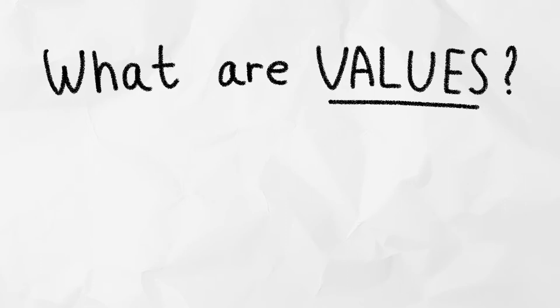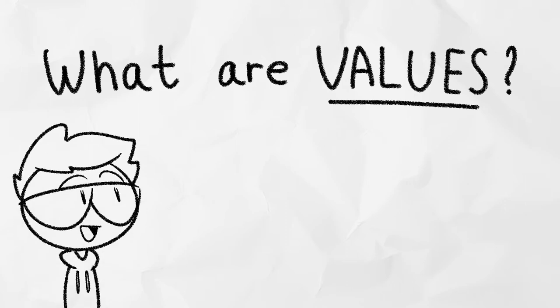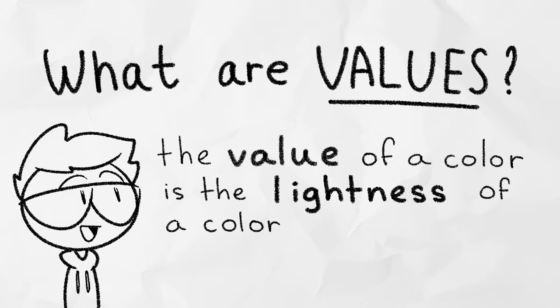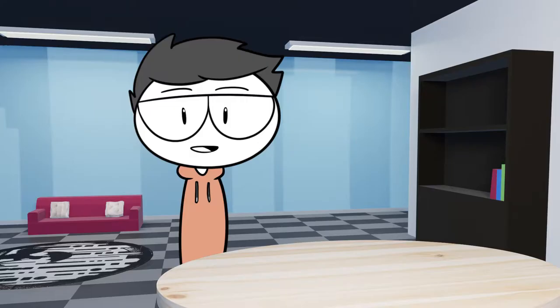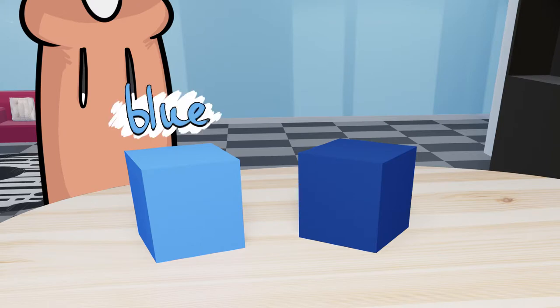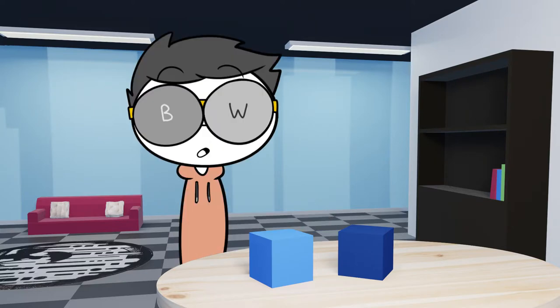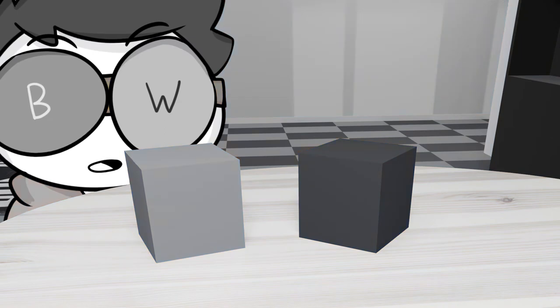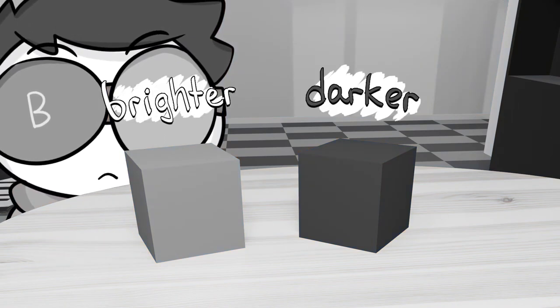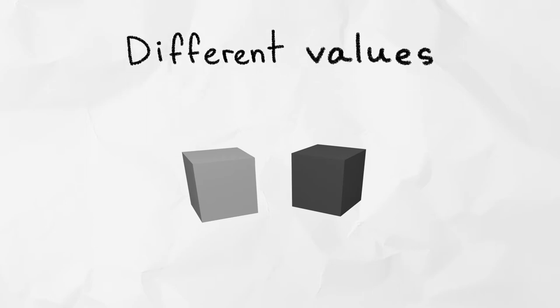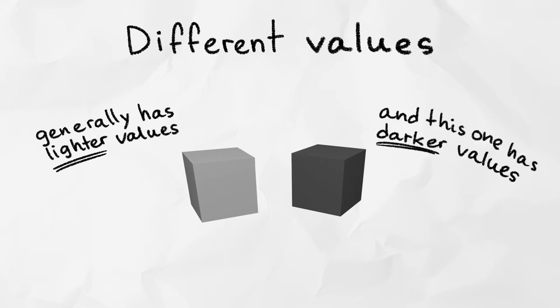What are values? One good way to look at it is that the value of a color is the lightness of a color. So let's bring these two cubes onto my desk, one being blue and the other being blue — but clearly there is a difference between these. What is that difference? Put on your black and white goggles and you'll see that the one on the right is darker and the one on the left is brighter. Now that we've made them black and white, we can see that the cubes have different values, one being generally lighter and the other being generally darker.